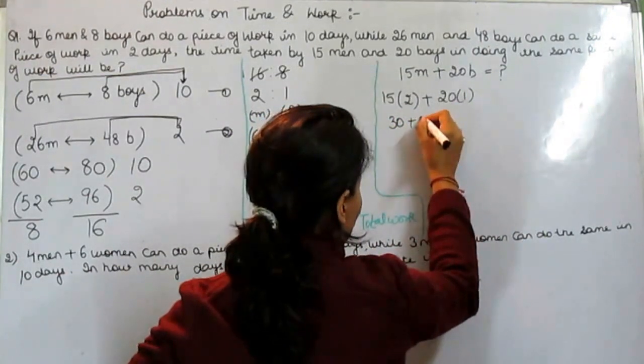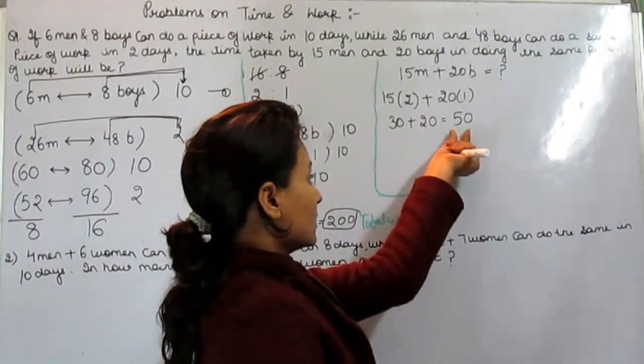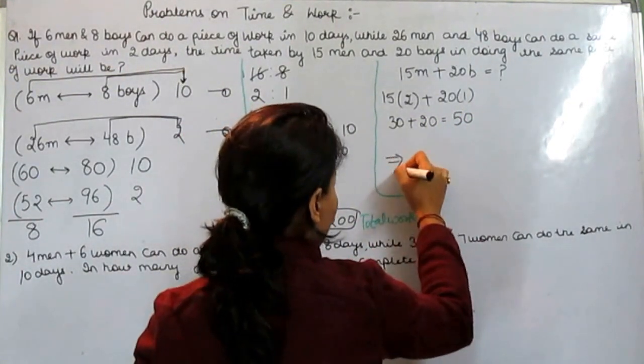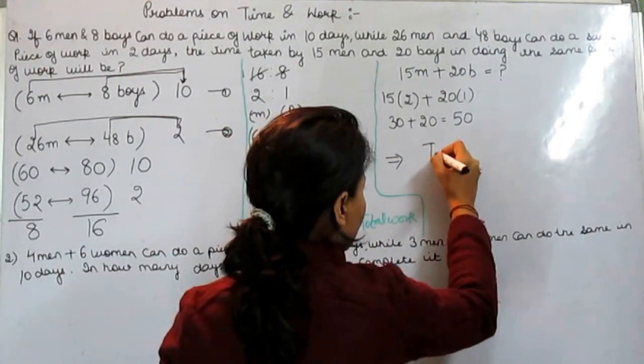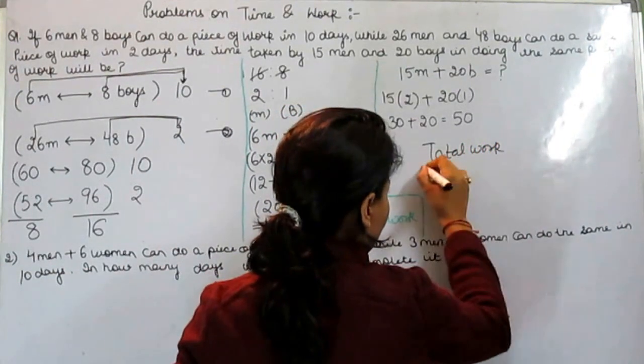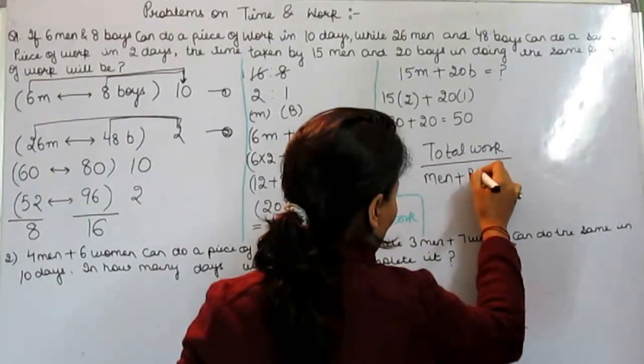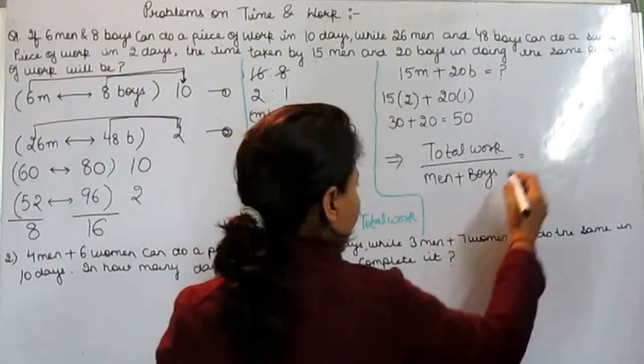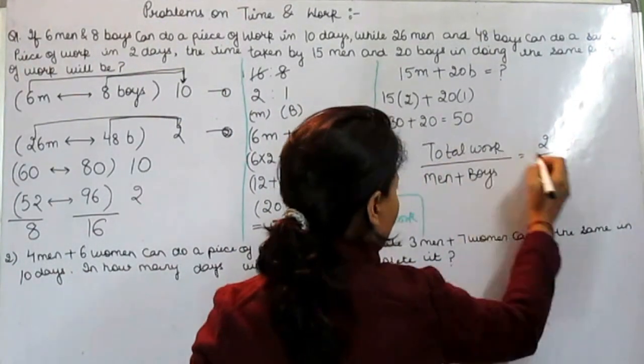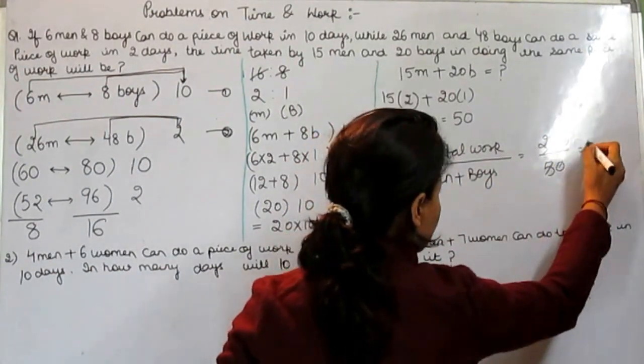15 into 2 is 30 plus 20 into 1 is 20, we get 50. So this 50 is men and boys. Now what we have to get: we have to get the time. So total work divided by men and boys. What is total time? That is 200 divided by 50.